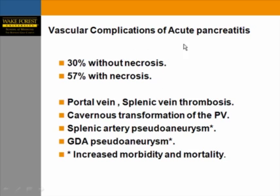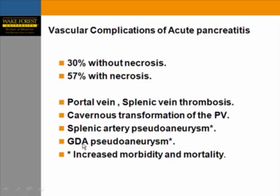Vascular complications of acute pancreatitis can be evaluated with color Doppler — seen in 30% of cases without necrosis and 57% with parenchymal necrosis. The most commonly involved vessels are the portal vein and splenic vein; complications include cavernous transformation as a result of portal vein occlusion. Arterial involvement commonly includes the splenic and gastroduodenal arteries. Aneurysms increase morbidity and mortality, so attention must be paid to exclude these vascular complications.